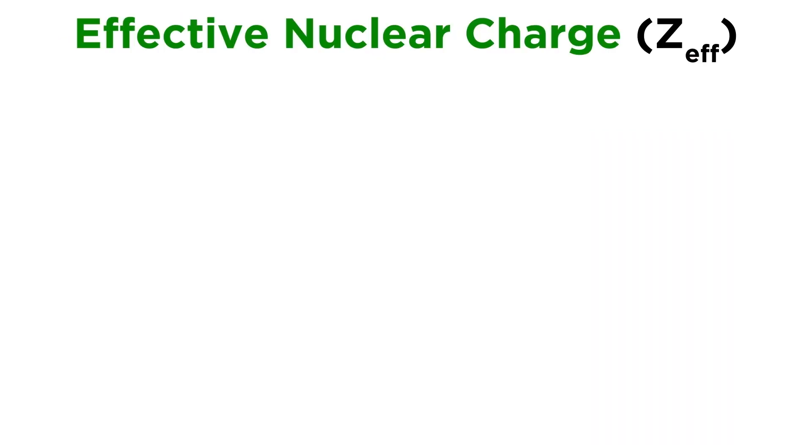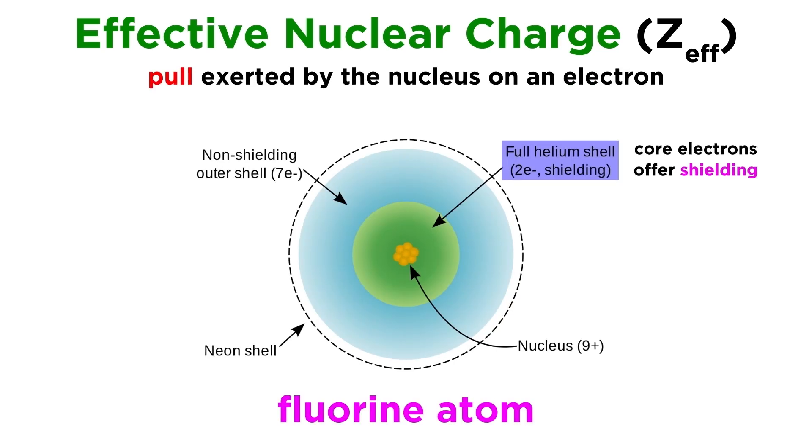To get a little more technical, any electron in an atom will experience a particular effective nuclear charge, symbolized with Z effective. This is the pull exerted by the nucleus on a particular electron of interest. The inner, or core, electrons shield the valence electrons from the pull of the nucleus. So Z effective will be Z, or the number of protons, minus the shielding, or core electrons.